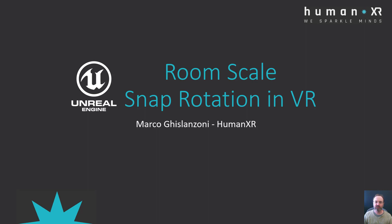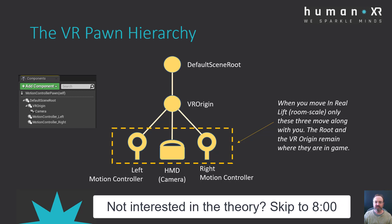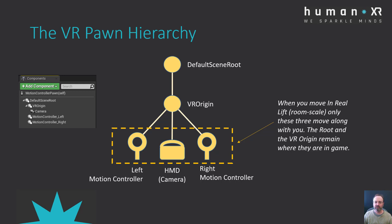Let's start by covering a bit of the theory. If you look at the standard VR template and the pawn hierarchy, you will see that there is a default scene root where everything is connected. Then there is a VR origin, which is needed to handle a shift in VR, and parented to it you have a camera corresponding to the HMD — the head mounted display — as well as the two motion controllers. If you move the pawn as an actor within the world, you are moving the default scene root, and the VR origin, motion controllers, and HMD will follow along.